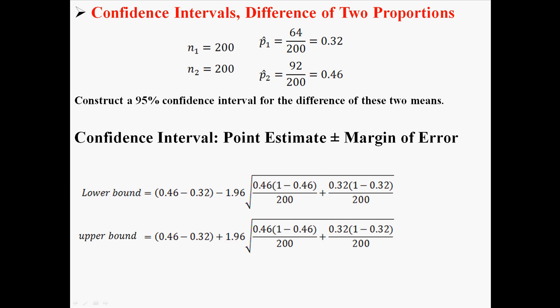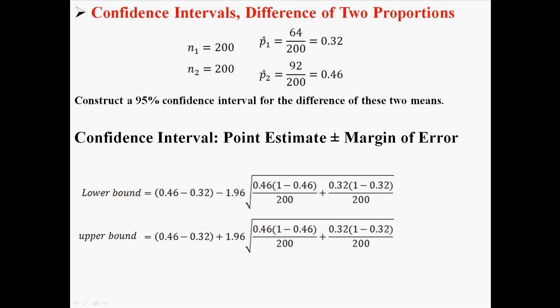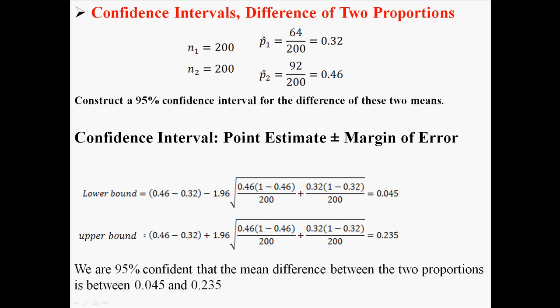Instead of z I put in 1.96. Now we have everything we need to solve for the lower bound and the upper bound. I find a lower bound of 0.045 and an upper bound of 0.235.